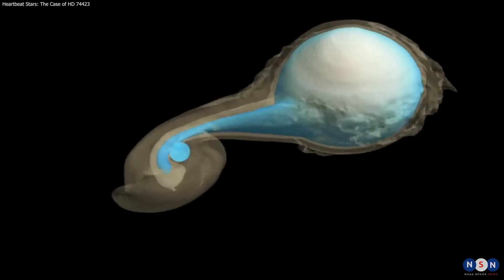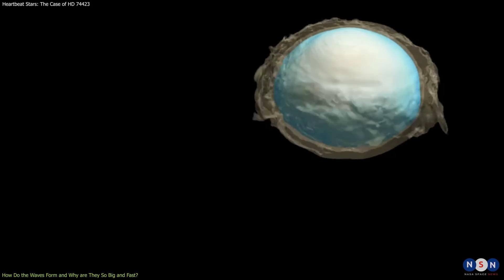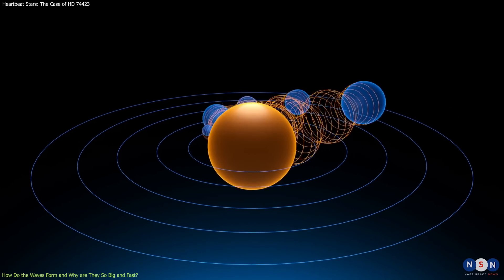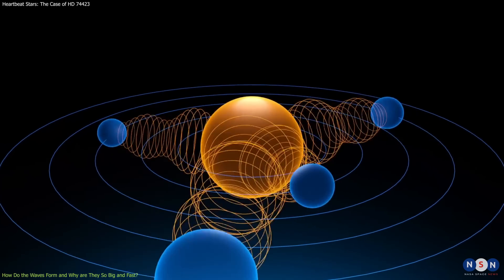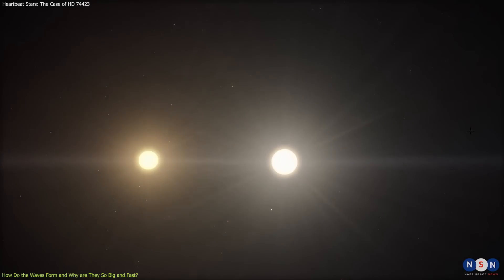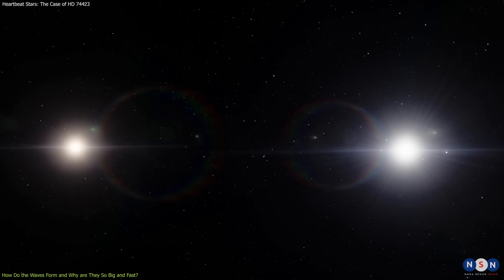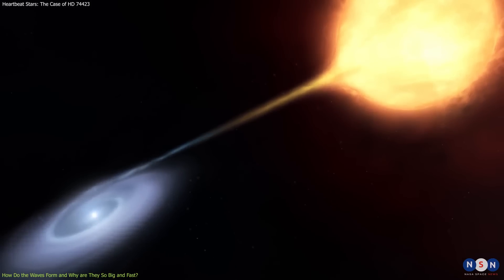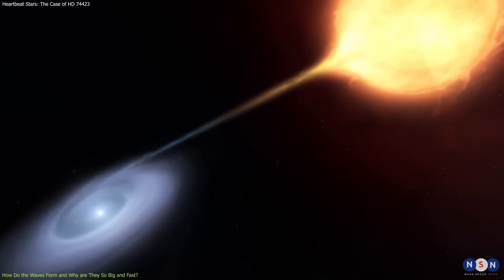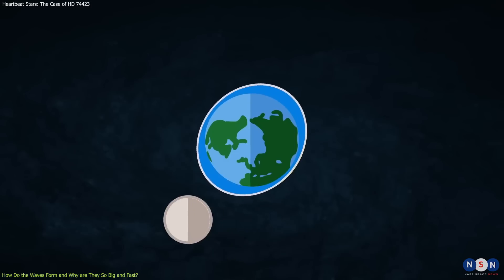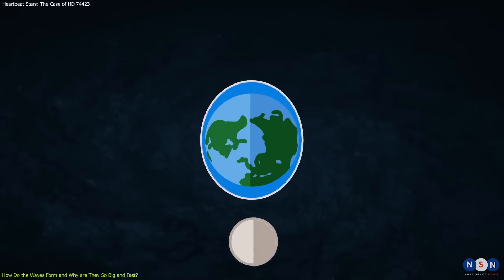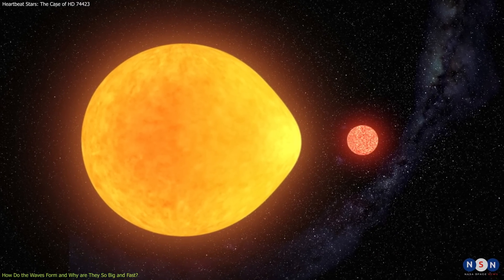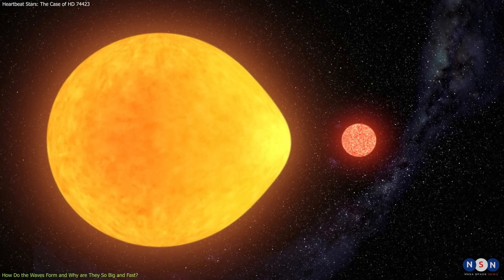How do these waves form, and why are they so big and fast? Well, it has to do with how gravity works in binary systems. Gravity is not constant. It depends on how far apart two objects are from each other. The closer they are, the stronger the gravity. The farther they are, the weaker the gravity. In binary systems, this means that one side of each star feels more gravity than the other side when they are close together. This creates an imbalance in pressure that makes the star bulge out on both sides along the line connecting them. This is called tidal bulging, and it happens to all objects with tides, including Earth.